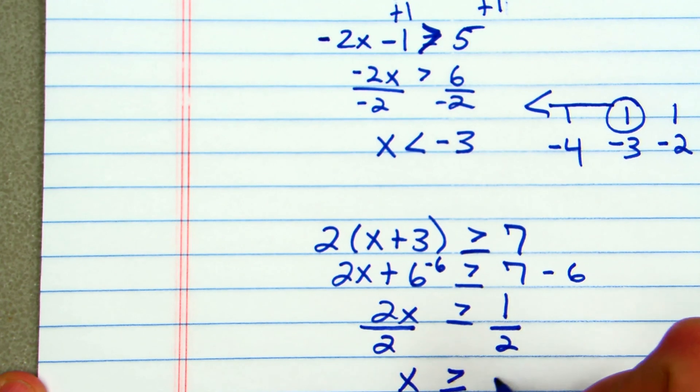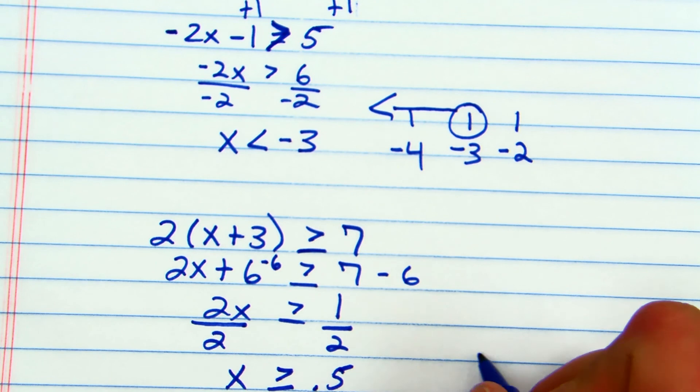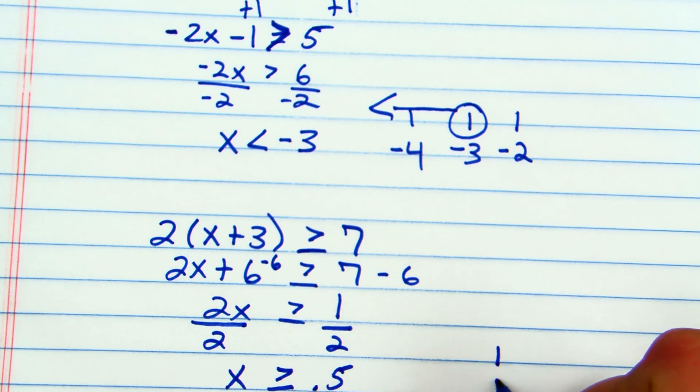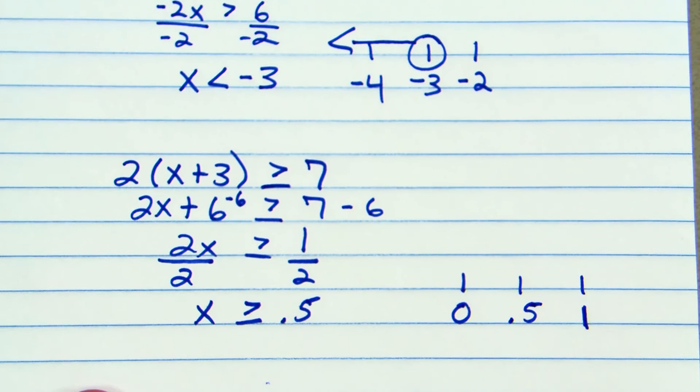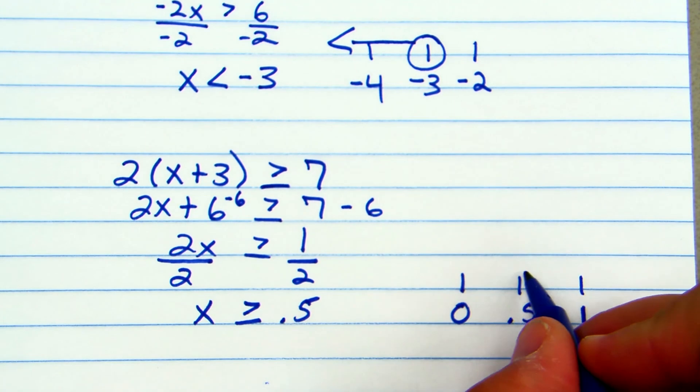I'll come over here. I'll put a 0 and a 1. 0.5 falls in between 0 and 1. I'll circle my 0.5. I will fill it in since it's underlined. That means it could be or equal to.